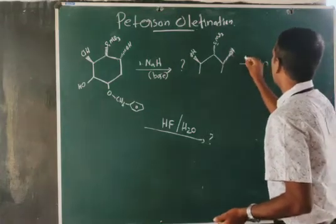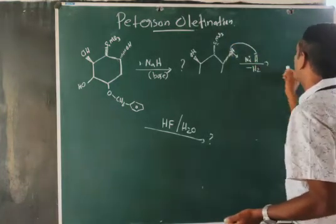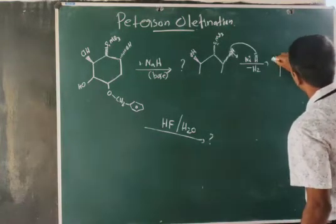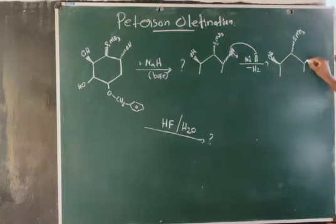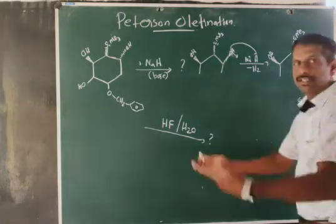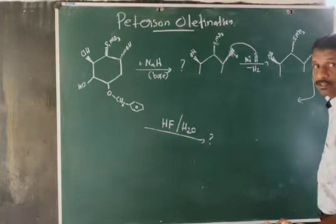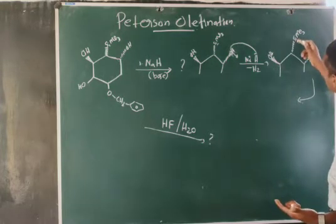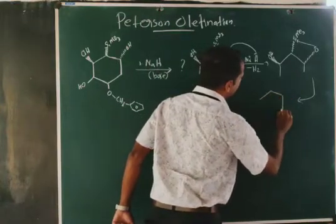The mechanism: when treated with base NaH — that is Na+ and H⁻ — this H⁻ abstracts the proton from OH, giving minus H2O. We get a structure where OH becomes O⁻. In the next step, the vacant d-orbital of Si interacts with the lone pair electrons of oxygen — the lone pair electrons of oxygen are donated to the vacant d-orbital of Si — and we get a penta-coordinated intermediate.